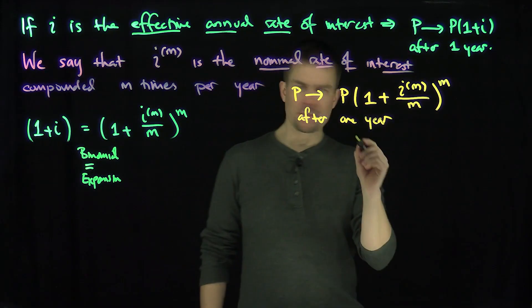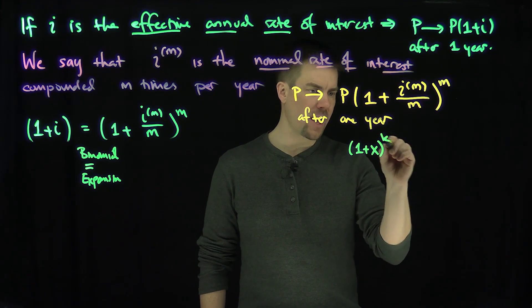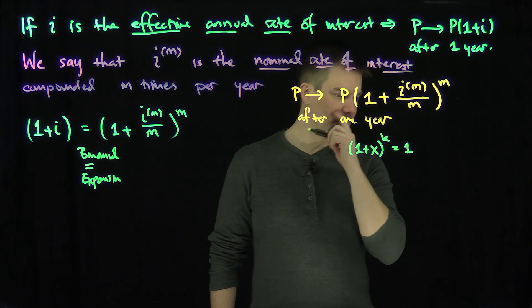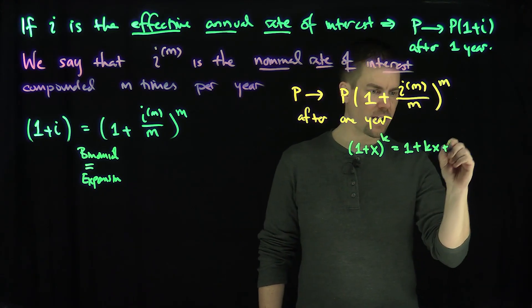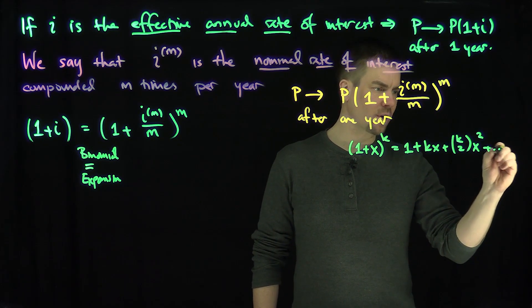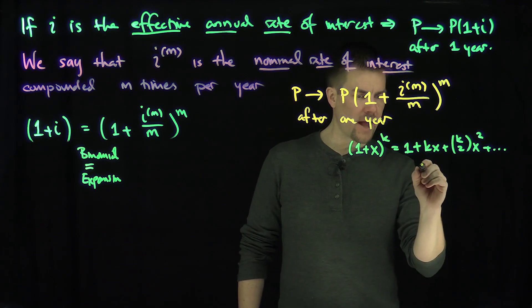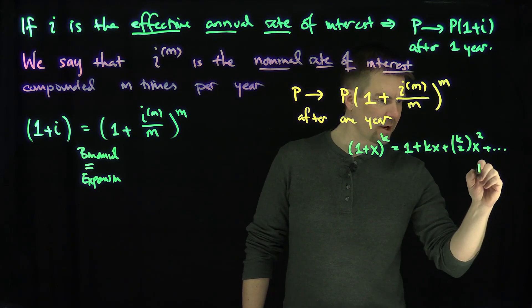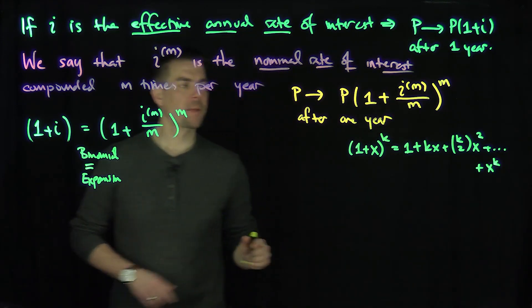Let me remind you what the binomial expansion is. The binomial expansion for (1+x)^k is 1, then we have kx, then we have k choose 2 times x squared, and so on. It ends all the way at the last term, which is x^k.